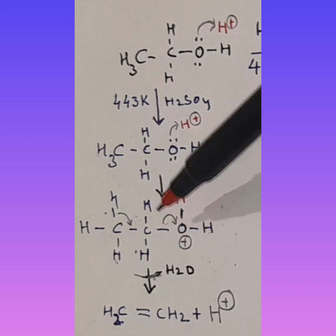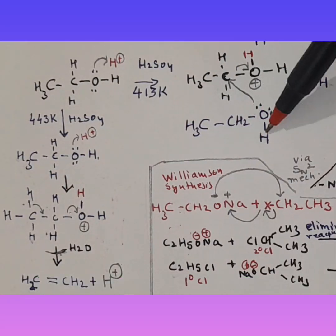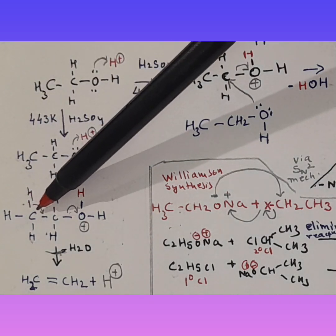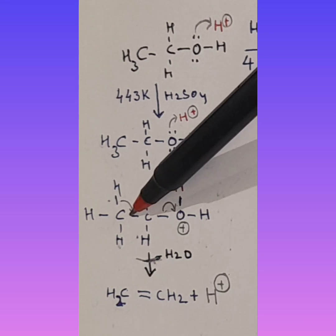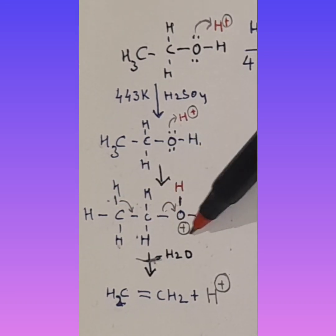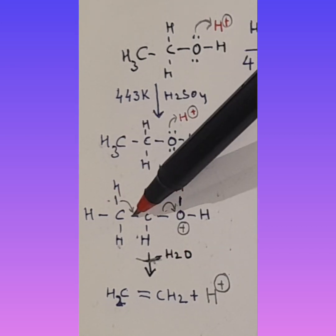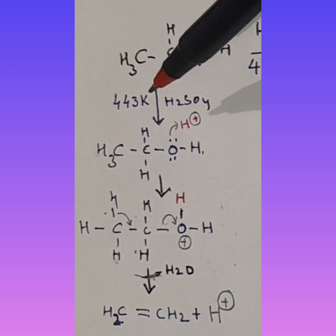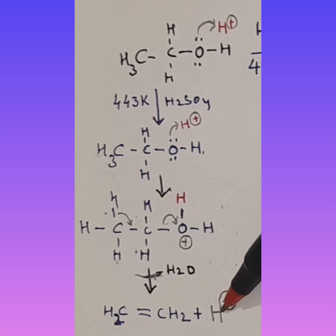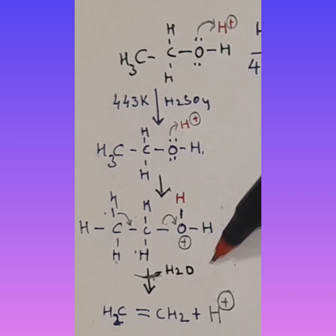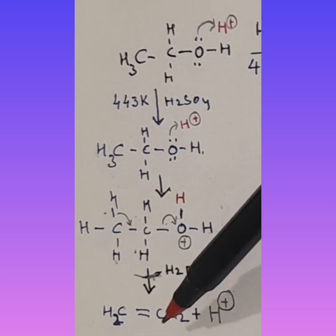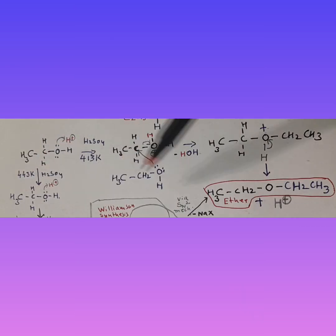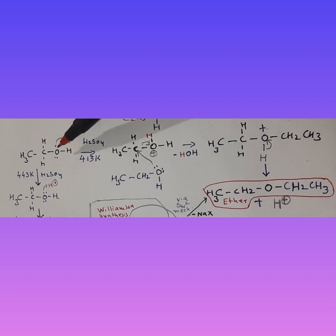However, since the temperature is high, it is not another molecule of ethanol that comes into play — instead, an intramolecular reaction occurs. A bond shifts, forming a water molecule, and a double bond is generated. So at 443 K we end up with an alkene and regenerated H⁺. The alcohol keeps converting to alkene — 443 K is detrimental for ether formation. This reaction is very sensitive to temperature.